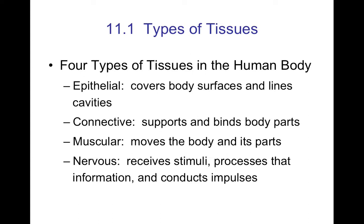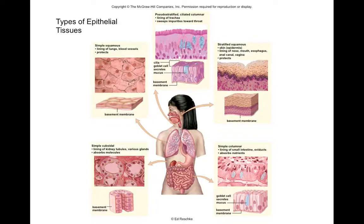The supportive and nutritional cells of the nervous system are the neuroglial cells.